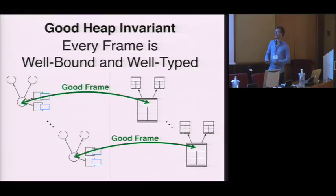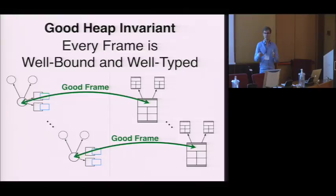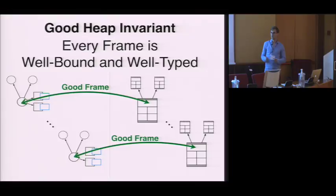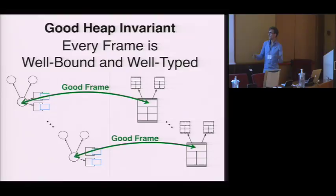Together, these two invariants form what we call the good frame invariant: a frame is good when it is well-bound and well-typed. Applying this to an entire heap, a heap satisfies the good heap invariant when every frame in the heap is well-bound and well-typed. For heaps satisfying this property, we can prove once and for all a language-independent lemma that taking any static resolution path and applying it at runtime is guaranteed to yield a slot that exists in a frame and produce a value that is also well-typed. This essentially gives us a way of proving type soundness for all memory-related operations.